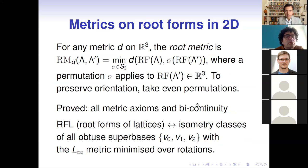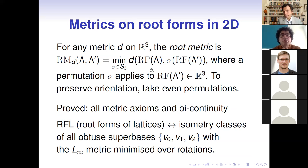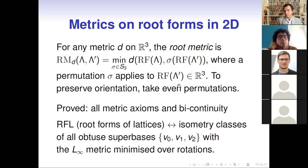To define a distance between lattices: we take the minimum over permutations applied to one root form. The root form is a triple of numbers, which we can view as a vector in R3. In principle we could take any metric on R3 — Euclidean, Minkowski, L1, L-infinity. When we minimize the distance between two three-dimensional vectors over all permutations of one root form, we get a well-defined distance. For orientation-preserving isometries we take only even (cyclic) permutations.